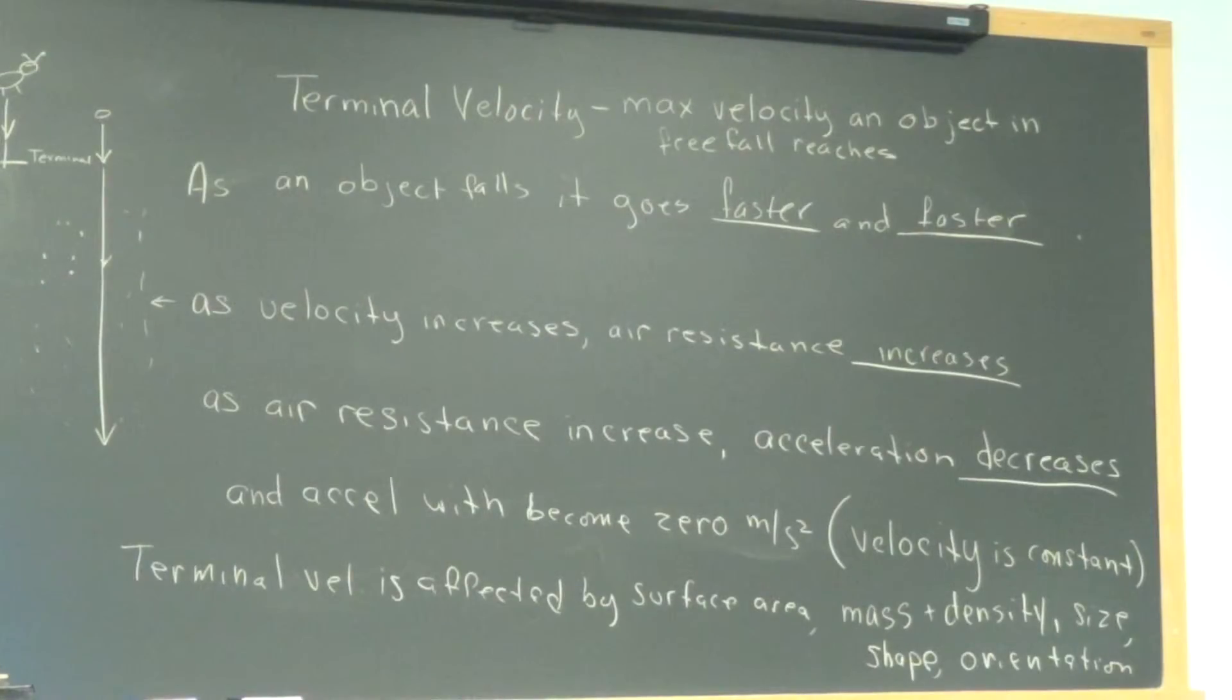He will reach terminal velocity quickly because of his shape, his density, his orientation. So therefore, when he goes to the Earth, he will not travel quickly. He will go slowly. This is someone who's traveling quickly. So he has reached terminal velocity. It's a constant velocity, and he will reach the Earth and be fine.